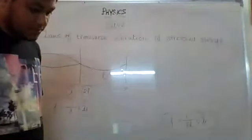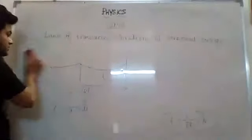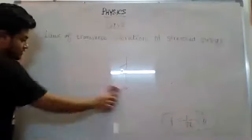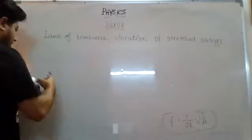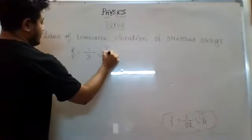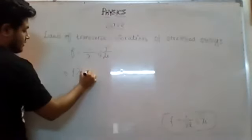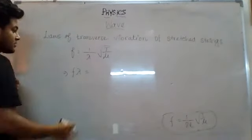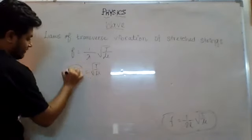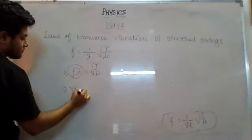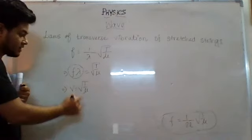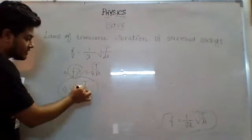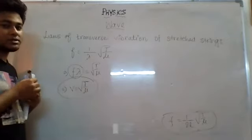From the equation f = (1/lambda) × √(T/mu), if I cross-multiply: f × lambda = √(T/mu). Since f × lambda = velocity V, we get V = √(T/mu). So to find the velocity of the wave, all I need is the tension and the mass per unit length.